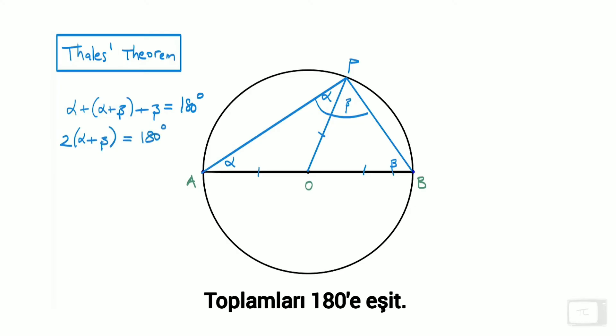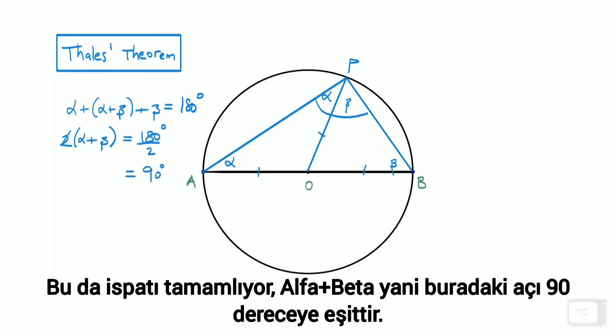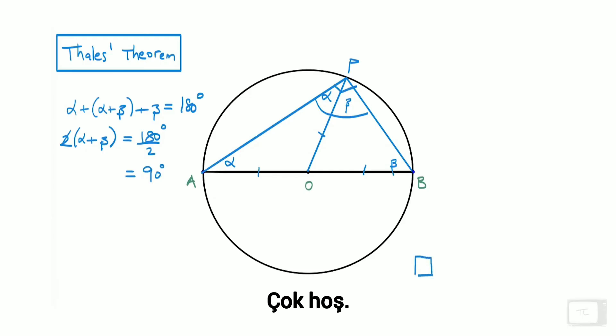We're going to divide both sides by 2, so the right hand side is 90 degrees. That concludes the proof: alpha plus beta, this angle here, equals 90 degrees. Very nice.